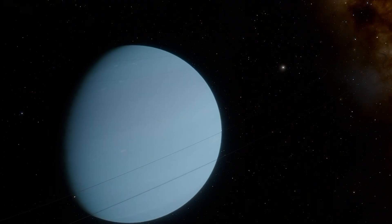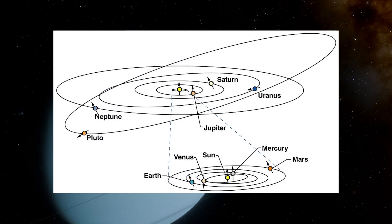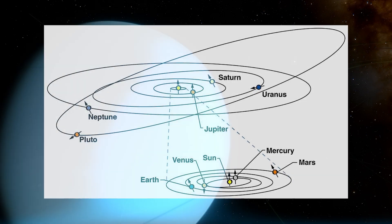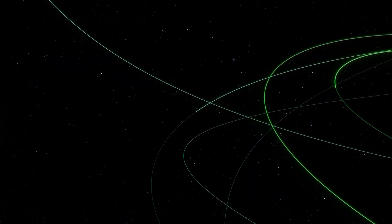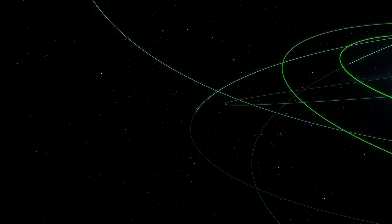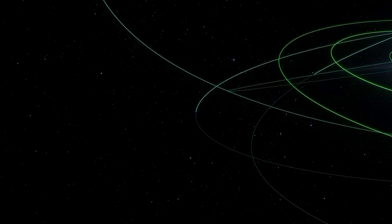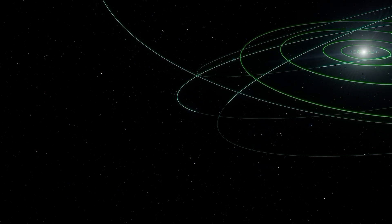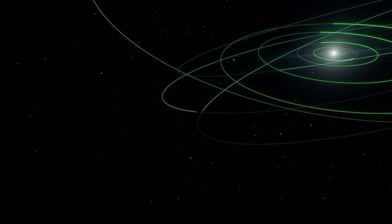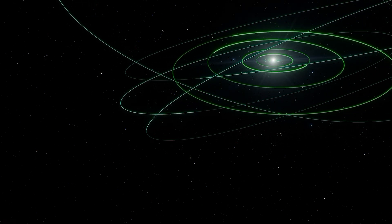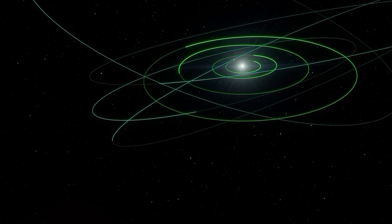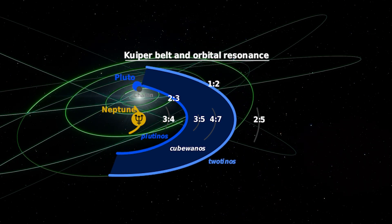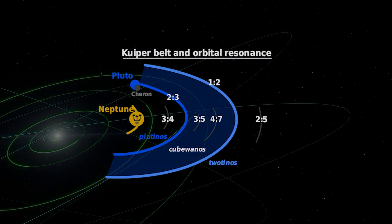An easy example of this in our solar system is the way the orbits of Neptune and Pluto are linked 3 to 2 — Pluto completes 2 orbits for every 3 of Neptune. This link works despite the enormous difference in mass and Pluto's relatively high orbital eccentricity. And many more Kuiper Belt objects resonate with Neptune beyond just Pluto.